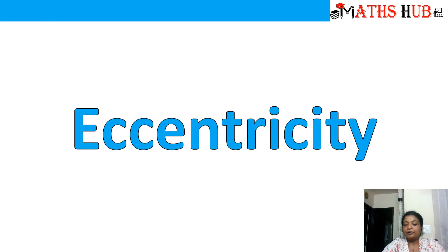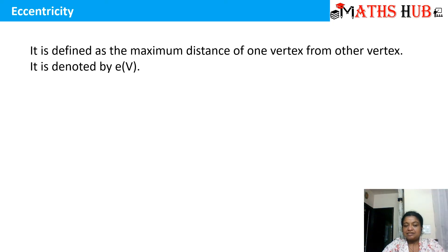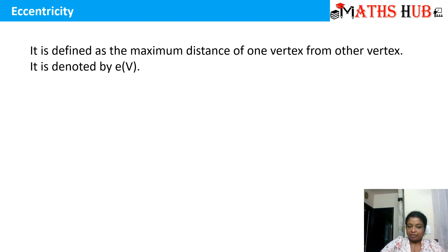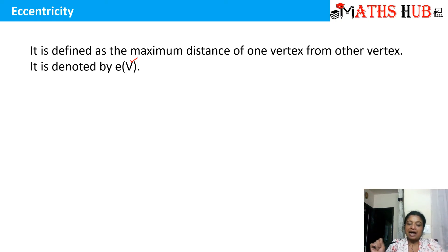Now let's talk about eccentricity. Eccentricity is calculated for each vertex. It is defined as the maximum distance of one vertex from all other vertices. That means to calculate the eccentricity of a particular vertex V, I calculate the distance of that vertex from all other vertices present in the graph, and once I have all those distances, I choose the maximum — that maximum distance is defined as the eccentricity.